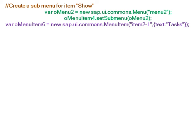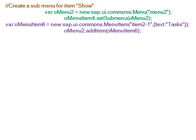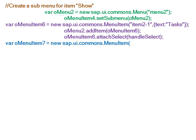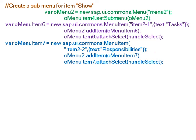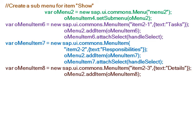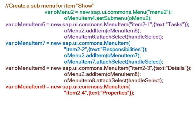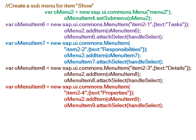For the show menu, we create menu item six with text 'tasks' and add it to the show menu with the event attached. Menu item seven with text 'responsibilities' is also added to the show menu with the event attached. Menu item eight with text 'details' is added to the show menu with the event attached. And the ninth menu item with text 'properties' is added to the show menu with the event attached.